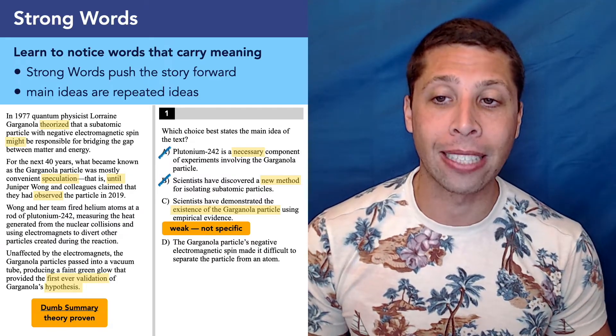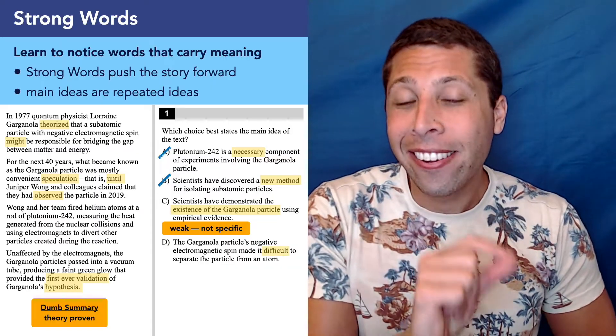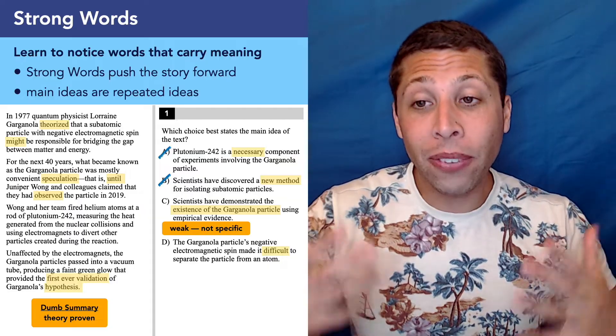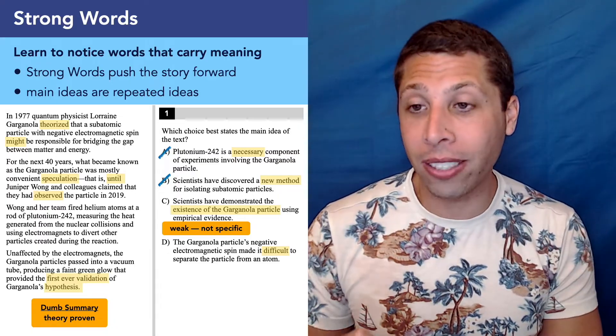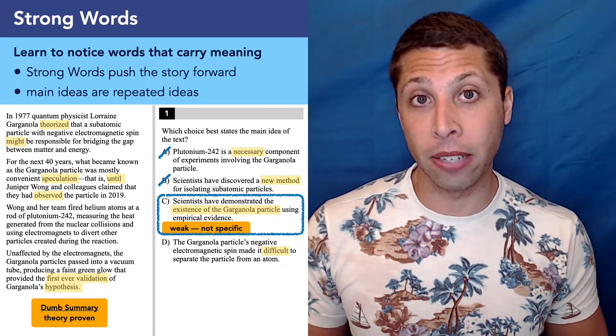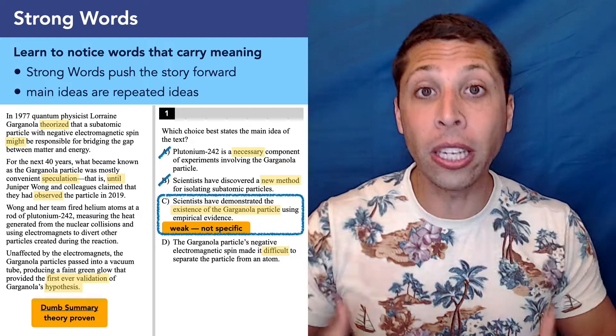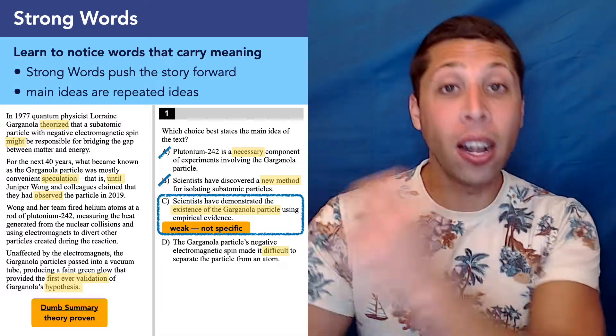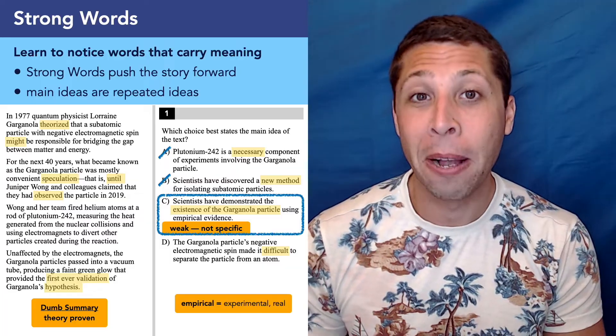But let's compare that to D just to see really why weak versus strong is such a big deal. The Garganola particle's negative electromagnetic spin made it difficult to separate the particle from an atom. Well, it took them 40 years. Maybe it was difficult. But do they actually say that it was difficult? Or are we saying that it was difficult? Are we assuming that if it took 40 years, it was difficult? Maybe that's just us. And they don't specifically say either that it's the spin that made it difficult. This is a very strong claim, and so we need to focus on these words. That one word in D is all it takes for us to get rid of this and pick choice C.